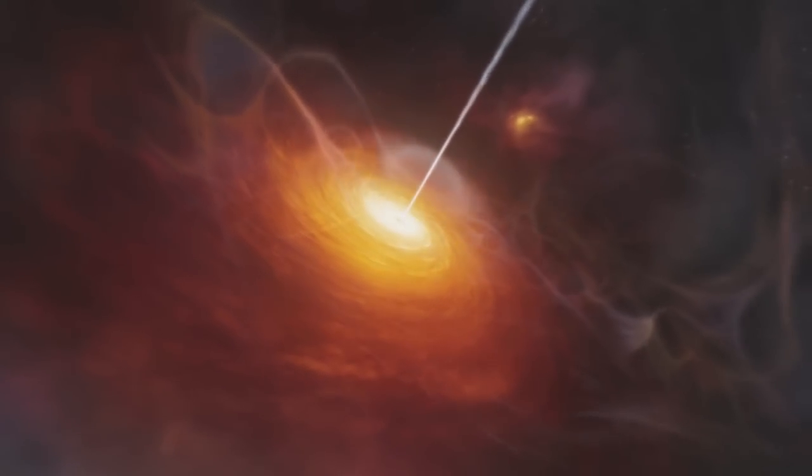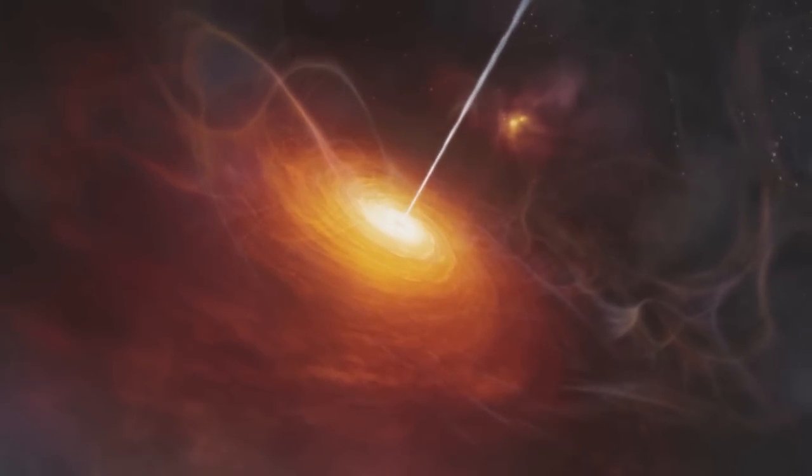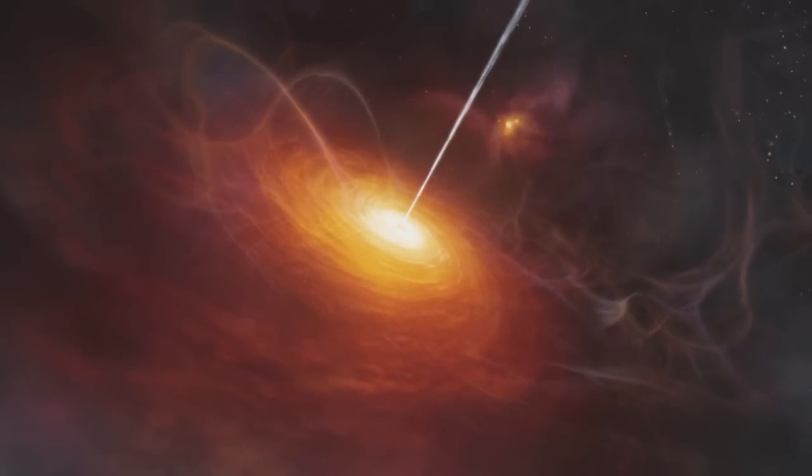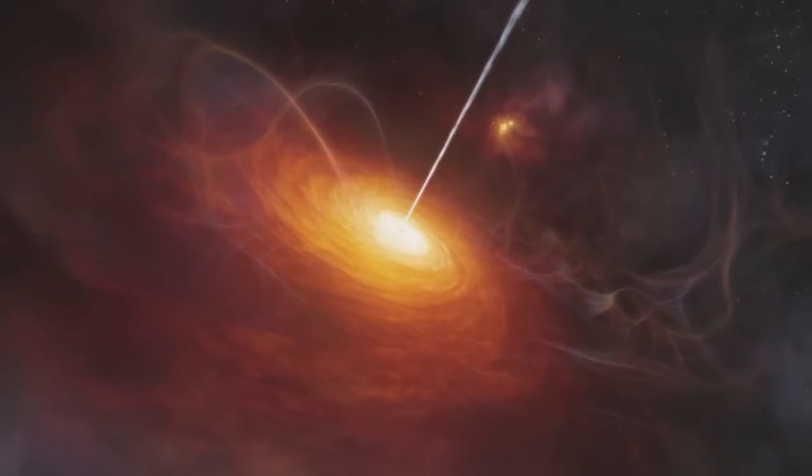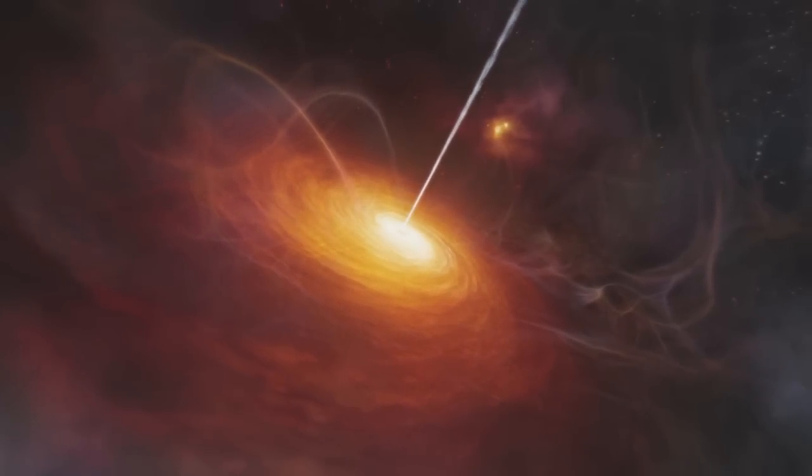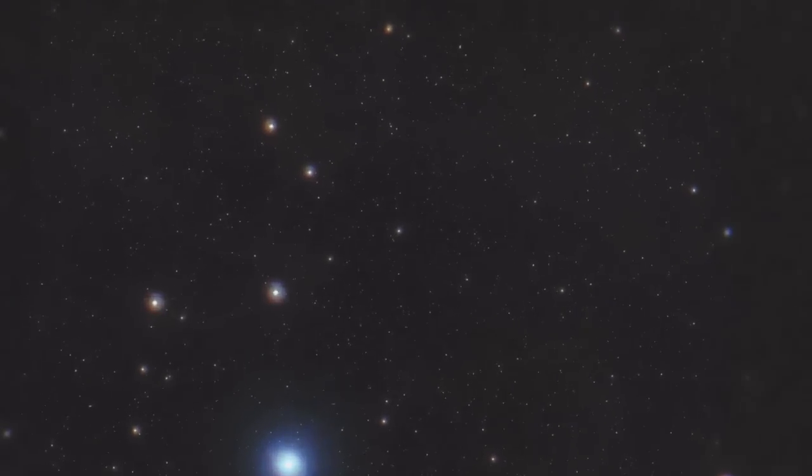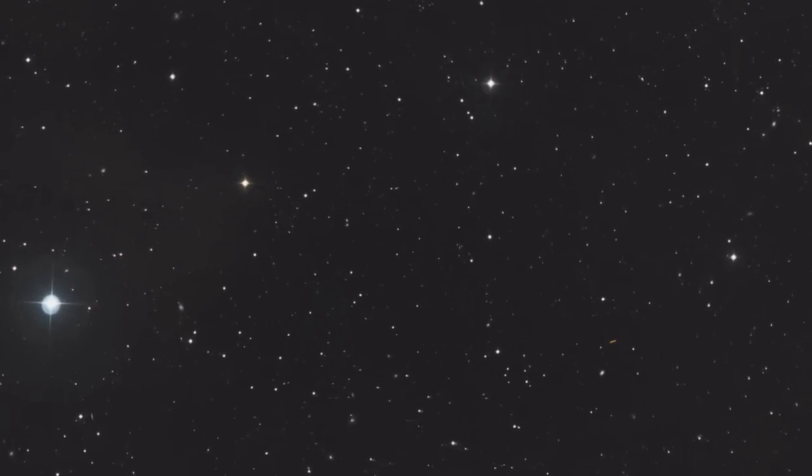By studying this blazing beacon in detail, the scientists have found that we are seeing this quasar at a time when the Universe was just 770 million years old. This means that the light from the quasar took 12.9 billion years to reach us. Never before has a brighter object been observed this far back into the early Universe.